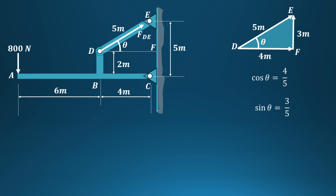In the right angle triangle DFE considered here, the angle theta gives us: cos theta equals the adjacent side 4 divided by the hypotenuse 5, whereas sin theta equals the opposite side 3 divided by 5.